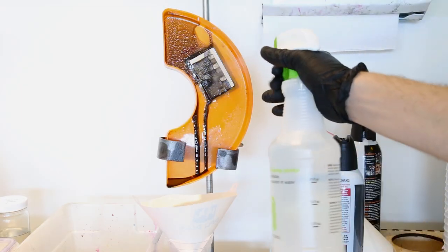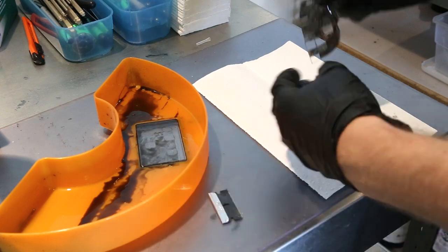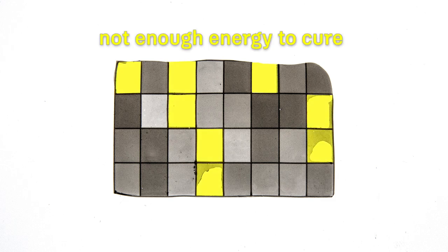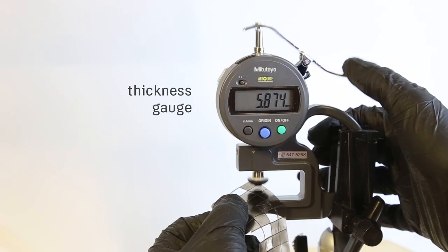After the print is complete, we wash off the uncured resin and are left with a thin film with distinct panels. The darker panels received more light and are thicker. Ones that receive less light are thinner. And some panels never reached a threshold amount of energy and did not solidify at all.